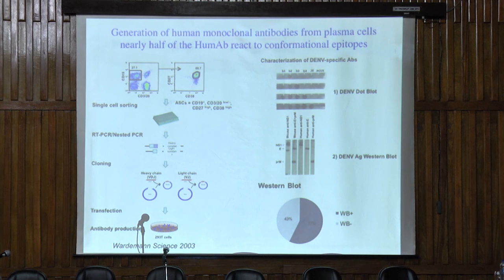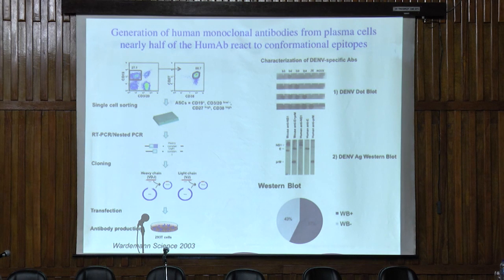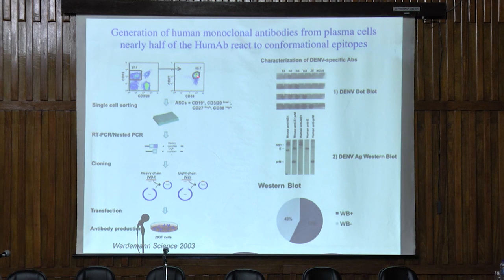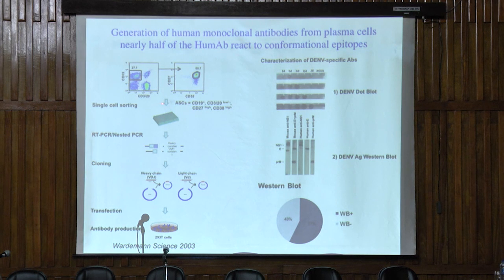Changing direction. This is another experiment to generate dengue antibodies, but done at a different phase of illness — the nearly acute phase, at day six, seven, or eight after the onset of symptoms. The principle is different from making antibodies from memory B cells. In this case, we sort activated B cells from these individuals. The activated B cell population increases greatly during infection and particularly during dengue infection. We single-cell sort them, then PCR out the antibody heavy and light chains, put them into an expression vector, and express protein in 293T cells.